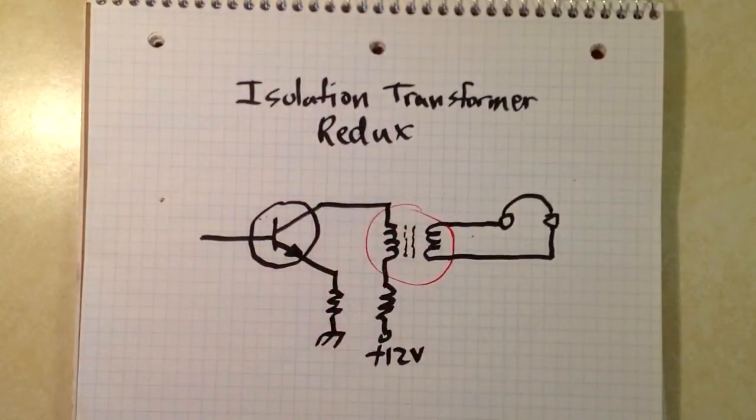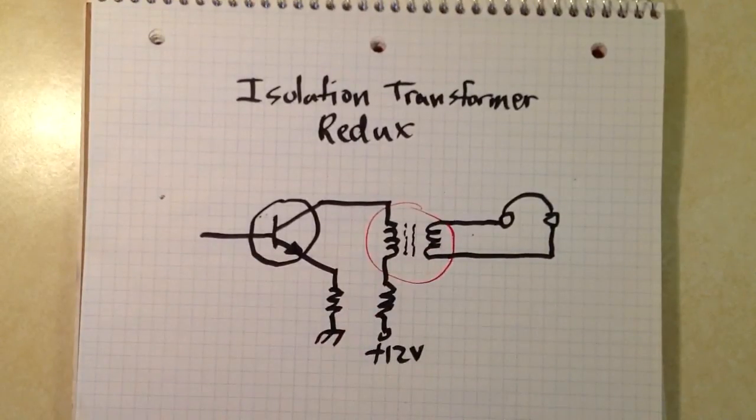Of course, if you capacitively couple the output of an amplifier to a headset, you're going to have plenty of capacitive interaction because that's what a capacitor is there for. So that will sometimes work better than just simple capacitive coupling.